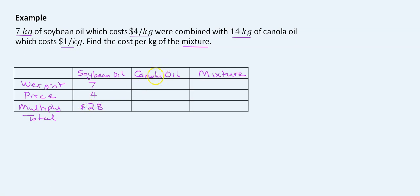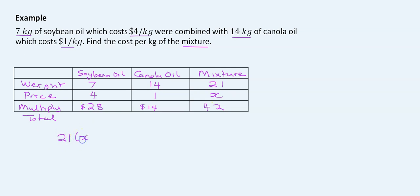Canola oil: weight = 14, price = $1 per kilogram, total = $14. For the mixture, the cost per kilogram is x, and the total weight is 7 + 14 = 21 kilograms. The sum of totals is 28 + 14 = 42. So: 21 × x = 42. Dividing both sides by 21 gives x = 2. The mixture costs $2 per kilogram.